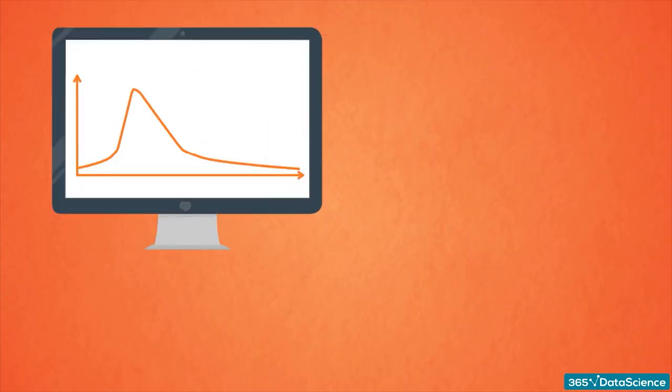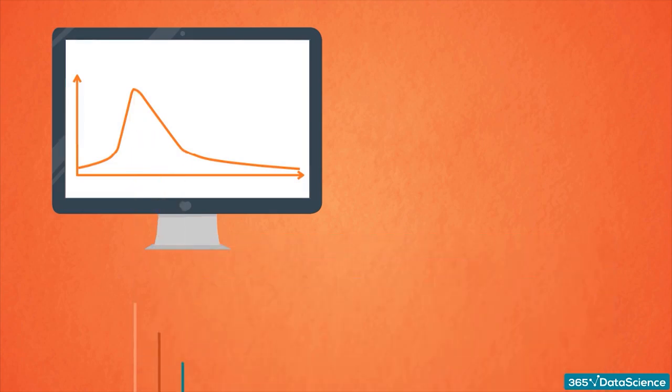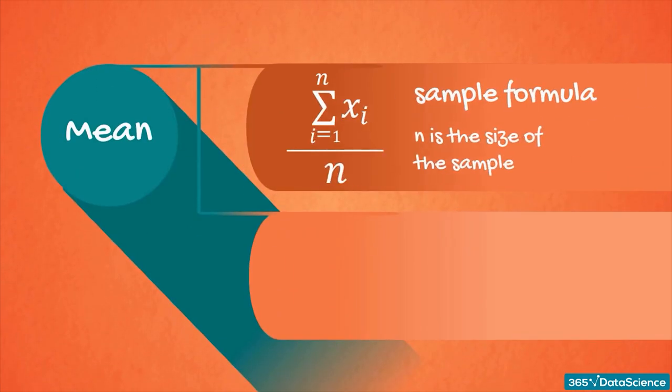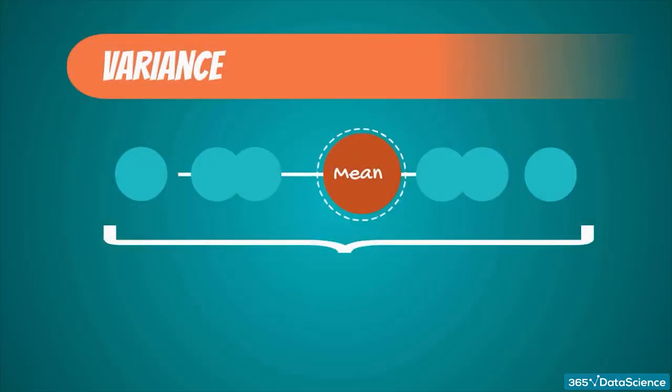You must be asking yourself why there are unique formulas for the mean, median, and mode. Well, the sample mean is the average of the sample data points, while the population mean is the average of the population data points. So technically there are two different formulas, but they are computed in the same way. Now, after this short clarification, it's time to get on to variance.